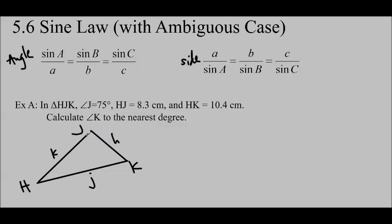You can see I have not done this to scale, which is fine. HJ is going to be little k, which is 8.3, and HK is this one, which is little j, so that's 10.4. Drawing these out and labeling it is going to help us figure out what the sine law is.